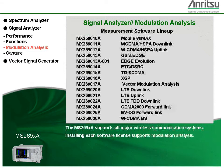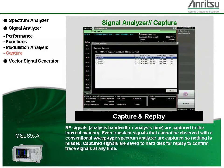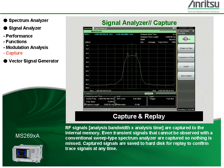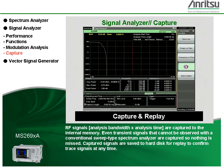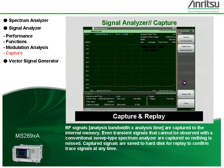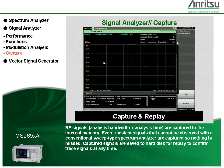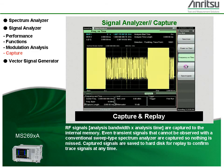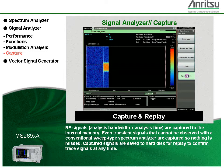The MS269XA supports all major wireless communication systems. Installing each software license supports modulation analysis. RF signals — analysis bandwidth multiplied by analysis time — are captured to the internal memory. Even transient signals that cannot be observed with a conventional sweep-type spectrum analyzer are captured so nothing is missed. Captured signals are saved to hard disk for replay to confirm trace signals at any time.